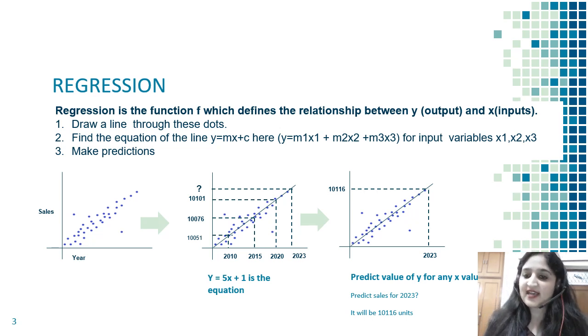For example, I don't know the sales for 2023. Based on past data, my company tells me what the sales were in 2010, 2015, and 2020. Now you predict sales for 2023. I can easily predict based on y equals fx plus one that the sales is going to be 10116.